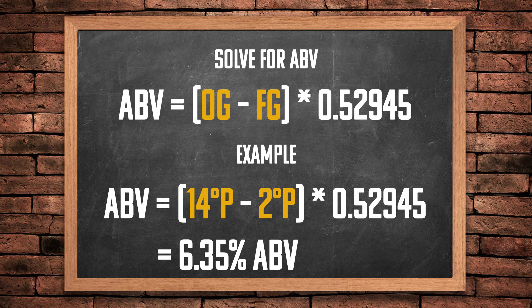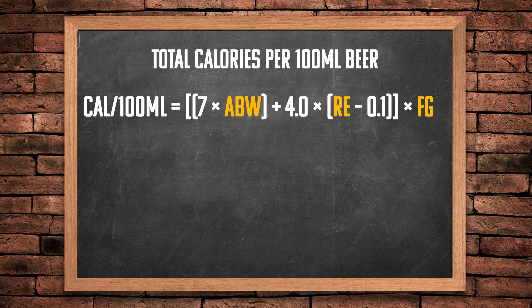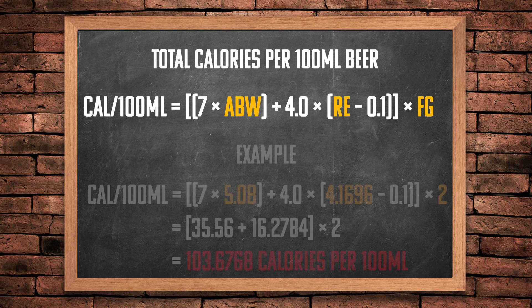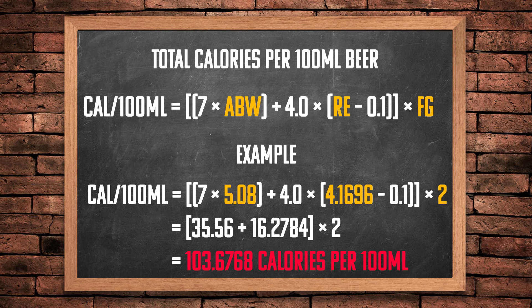Based on all the previous calculations we can now calculate the total calories per 100 ml of beer. The formula is: (alcohol constant 7 × alcohol by weight) + (carbohydrate constant 4 × (real extract − 0.1 ash value)), all multiplied by the final gravity. For our Saison: (7 × 5.08) + (4 × (4.1696 − 0.1)) × 2, which comes to approximately 103.68 calories per 100 ml.